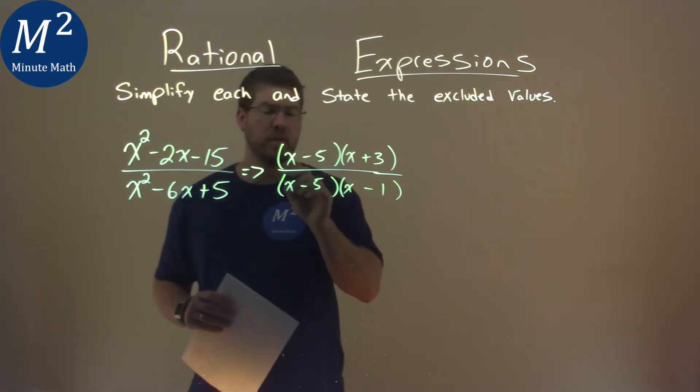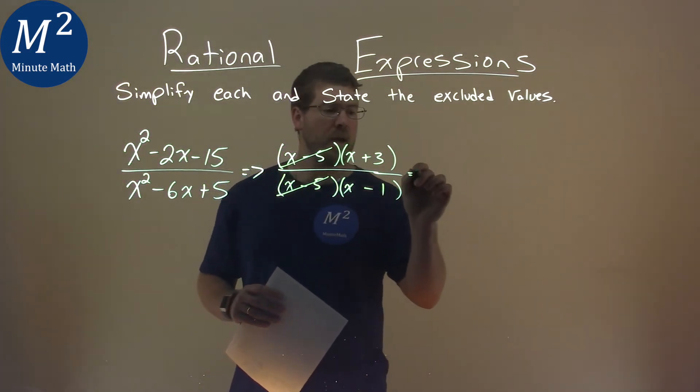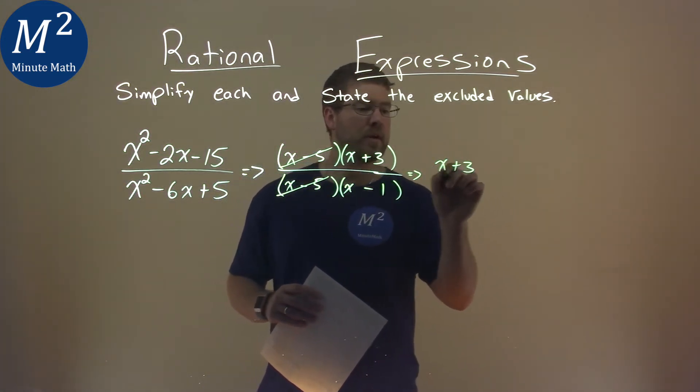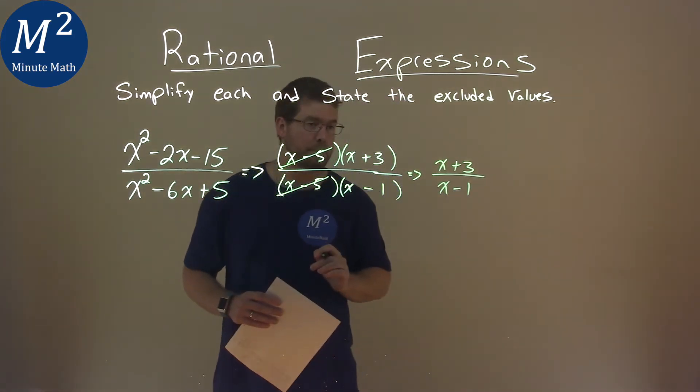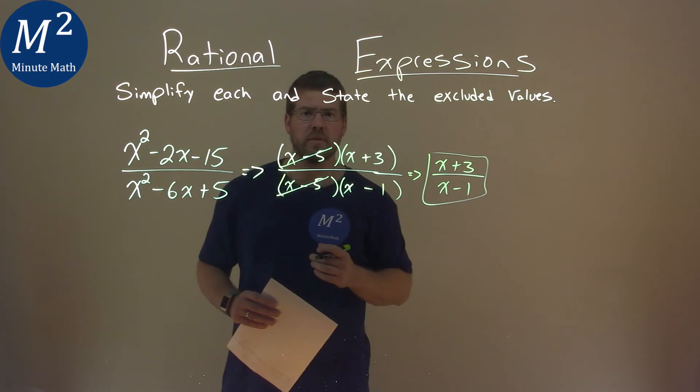Luckily for us, we see x minus 5 over x minus 5. They cancel, and we're left with x plus 3 over x minus 1. This can't simplify anymore, and now it's in simplest form.